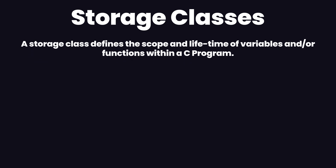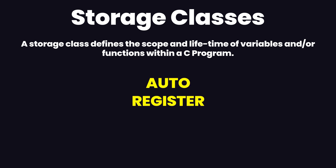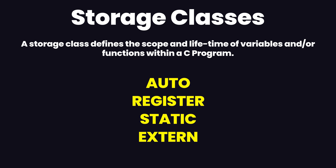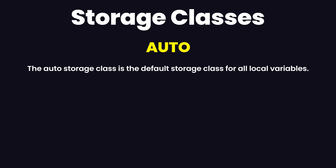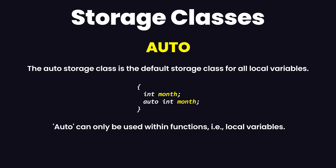In C programming language we have four different storage classes: auto, register, static, and external. The auto storage class is the default storage class for all local variables. For example, 'int month' and 'auto int month' mean the same exact thing — we are defining two variables in the same storage class.